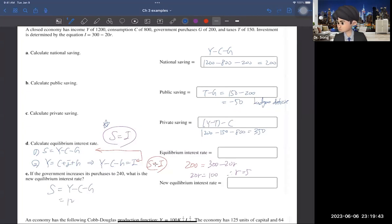So, saving is Y minus C minus G. Y is 1,200. Consumption is 800. Now, the government spending or the government purchase becomes 240. Then, the saving is 160.